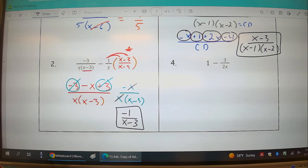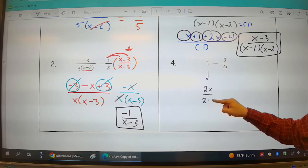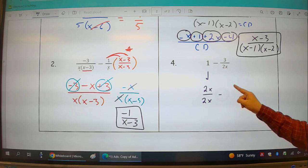Last one, number 4. I don't have two fractions. I have a whole number and a fraction. But what you got to remember is how to turn a whole number into a fraction. If I have 1, 1 is just the same thing as 2x over 2x. Anything divided by itself is 1.